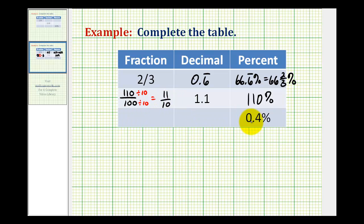And for the last row we have 0.4 percent. We want to write this as a fraction and a decimal. So as we said a moment ago a percentage is a number compared to 100. So written as a fraction this would be 0.4 over 100.